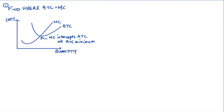So if we had an example where our total cost was equal to 6q squared plus 30q plus 150, we would find our average total costs and then our marginal costs first.